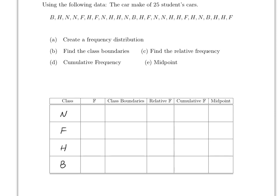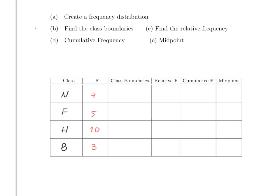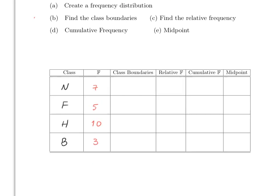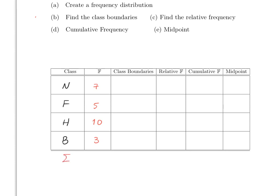The classes are the car brands: Nissan, Ford, Honda, and BMW. For the frequencies, count each brand just like before. Nissan appears seven times. Ford appears five times, Honda ten times, and BMW three times. Check that the frequencies sum to 25, which matches the stated sample size — and they do.